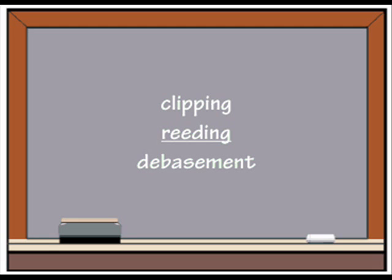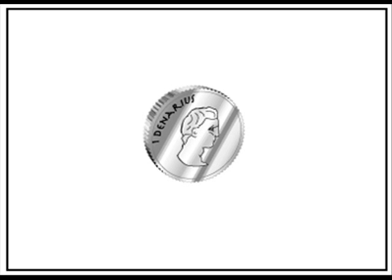In later centuries, a system called reeding came into practice. A reeded coin has grooves along its edge, making it easy to see whether or not clipping has taken place.